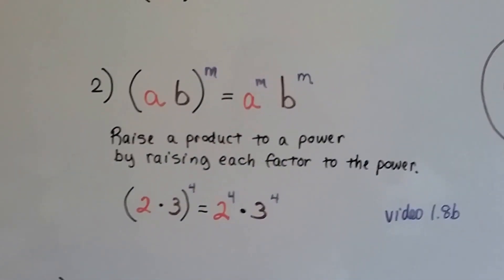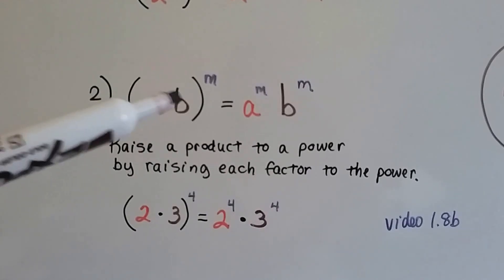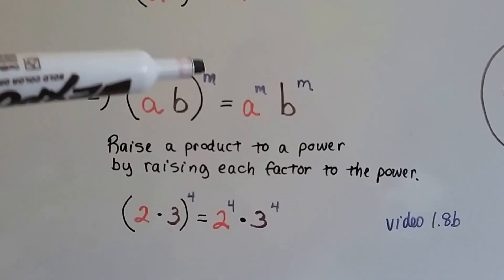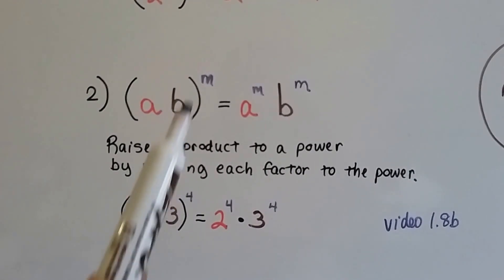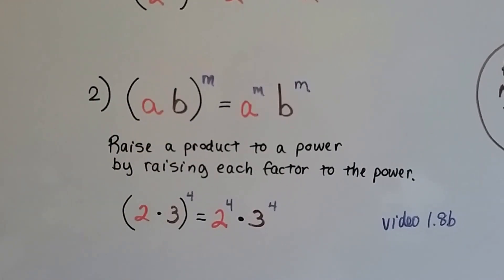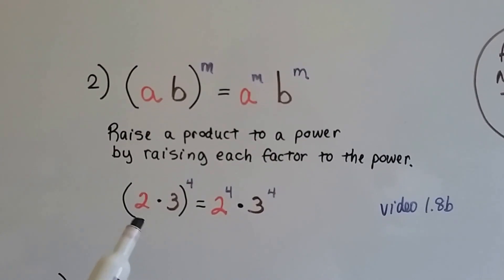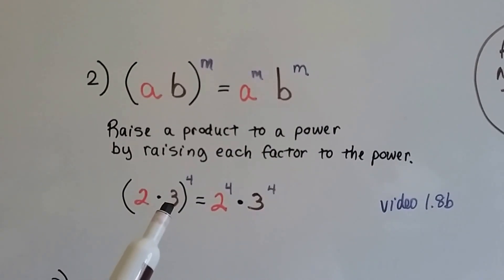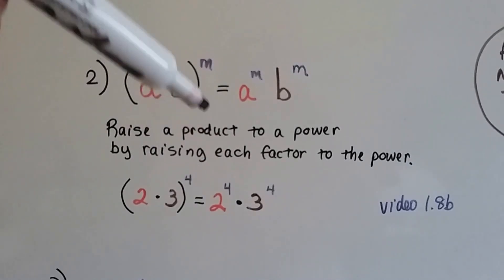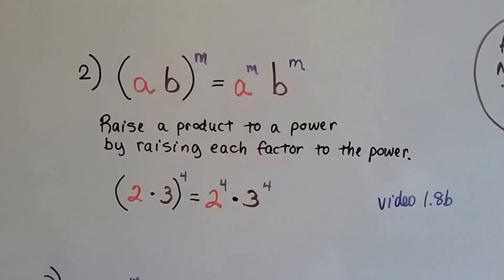Here's the second power rule. When we've got a and b inside the parentheses and it's got an exponent on the outside, we distribute this m to both factors inside the parentheses. So we have a to the m and b to the m. If we use real numbers, we have 2 times 3 on the inside of the parentheses and this is to the fourth power. It means 2 to the fourth power times 3 to the fourth power.